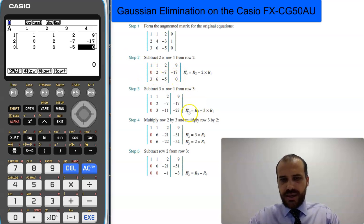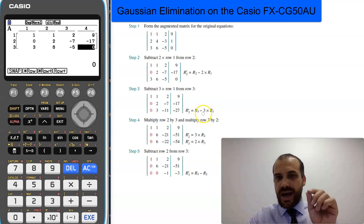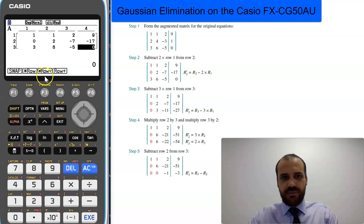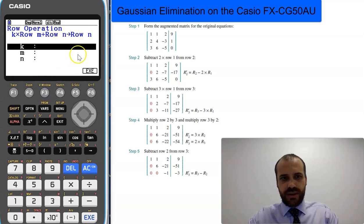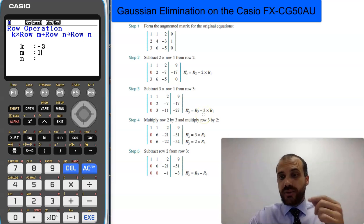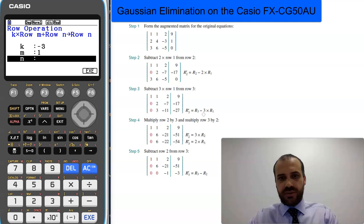Now our next step here is to add negative 3 times row 1 to row 3. So again, we're using the same row operation here. We're multiplying it by negative 3, and it's row 1 that we're multiplying by negative 3.